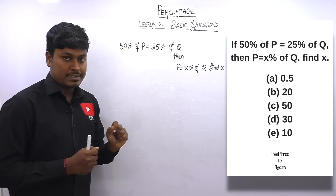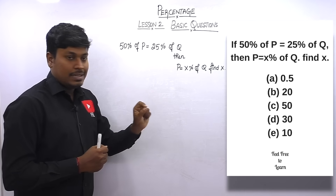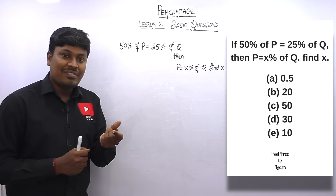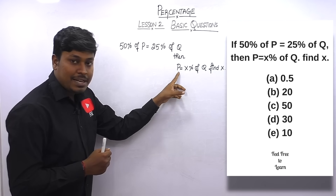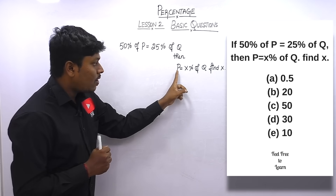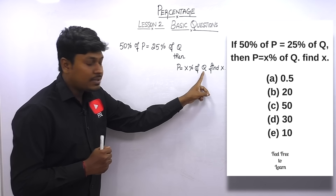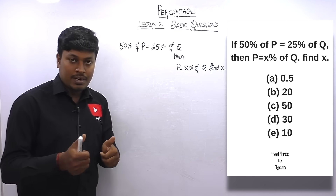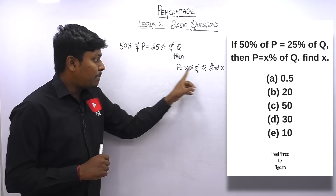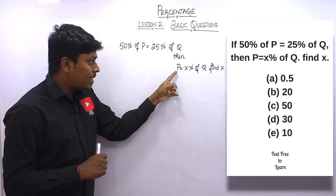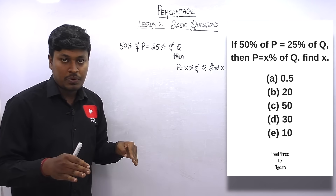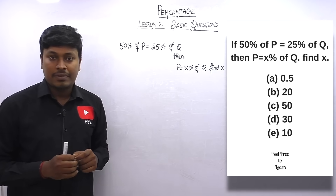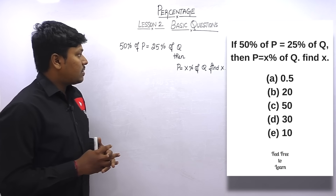To find the value of x, we need to eliminate both q and p. In order to eliminate p, we can convert the q term in terms of p so that we can cancel p on both sides. Alternatively, we can convert p in terms of q and eliminate q. Either method works.